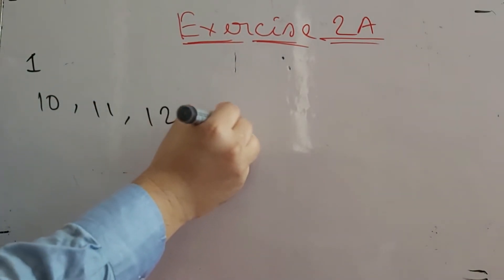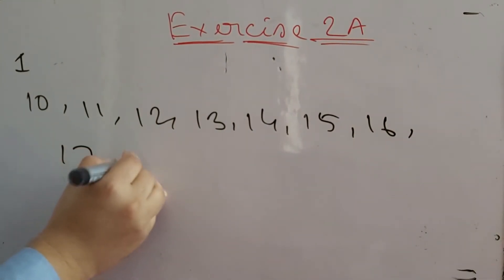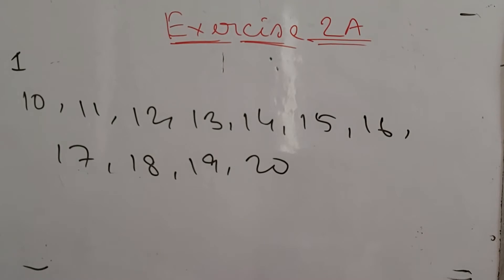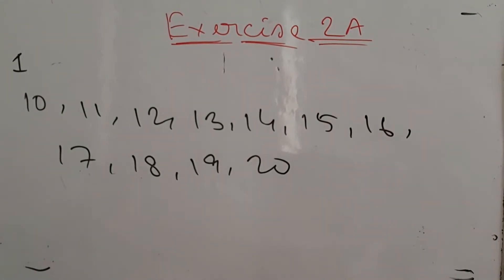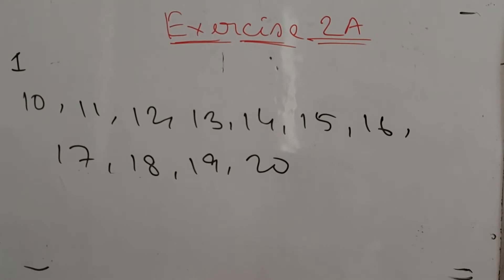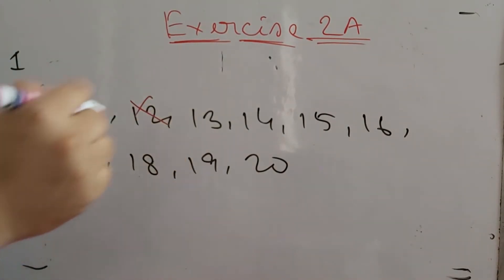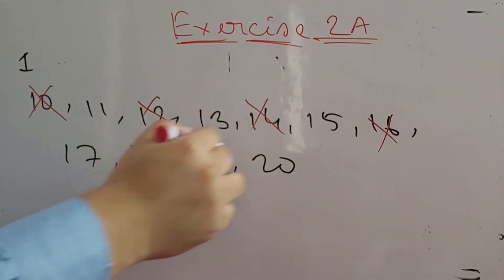The numbers between 10 and 20 are: 10, 11, 12, 13, 14, 15, 16, 17, 18, 19, and 20. We already said that 2 is the only even prime number, so other even numbers are not prime. That means 10, 12, 14, 16, 18, and 20 are not prime numbers.